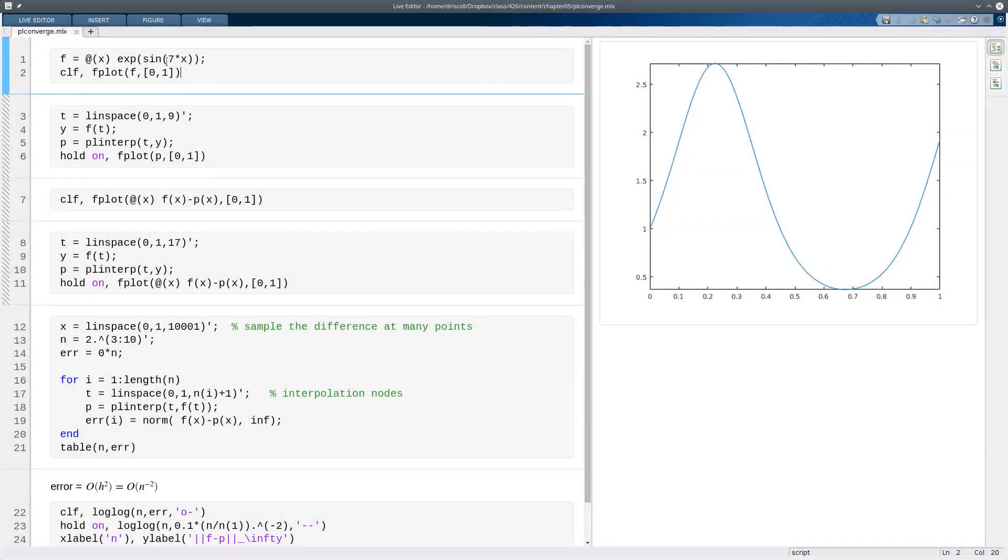So here's a simple smooth function that you can see here over the interval 0 to 1. And I'm going to set this up for piecewise linear interpolation. So here I'll choose 9 nodes, which means n is equal to 8. And y will be the value of f at those nodes. So that's our data vector.